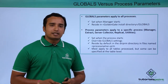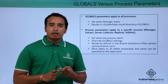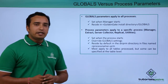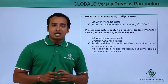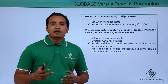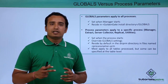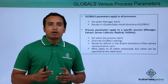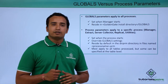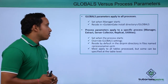Runtime process parameters are specific to each and every process, like the extract process, replicat process, data pump process, or the server collector process. These parameters are set when that particular process is started. For example, when the extract process is started, it will use the parameters from the extract parameter file, and it overwrites the global settings. By default, it resides in the dirprm directory.